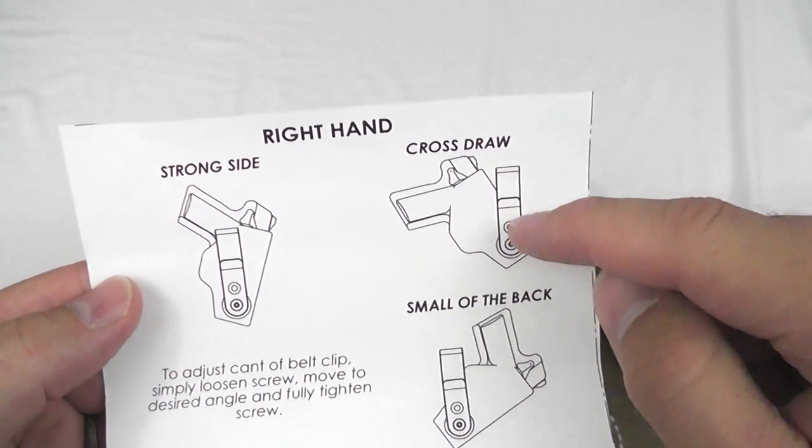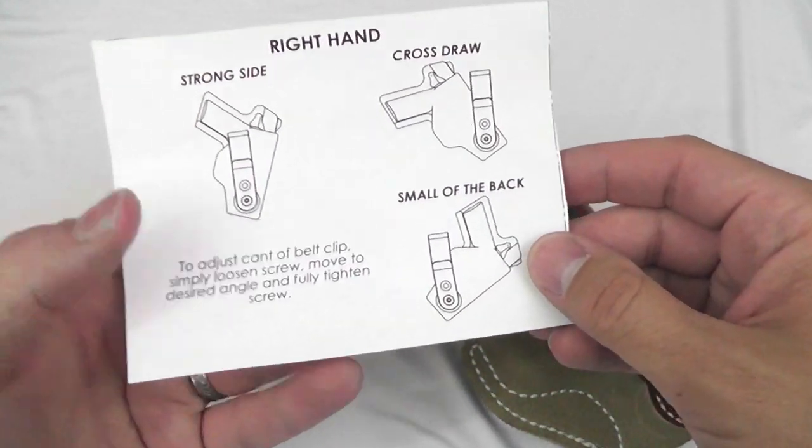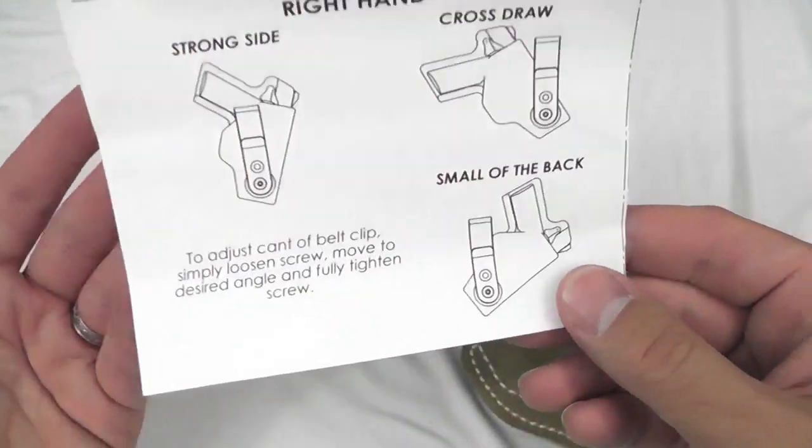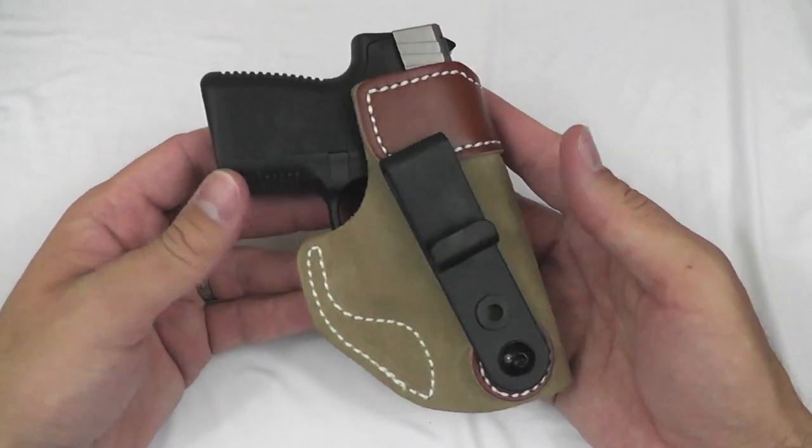Cross draw. Okay, so that would be like, you know, put down sort of in the appendix carry, something like that. Small of the back. Here's a way that you would do that. Man, I mean, that's really cool. They've given you all the options. All the options in one holster.